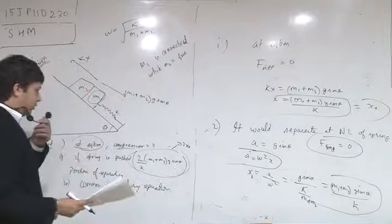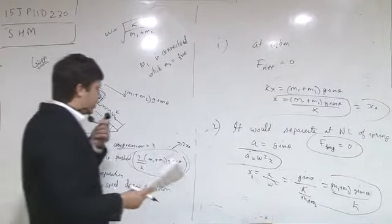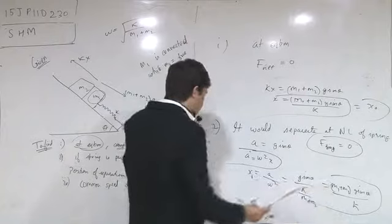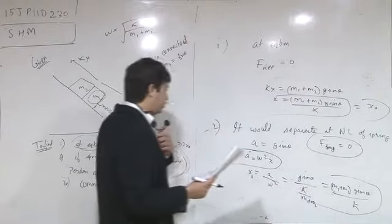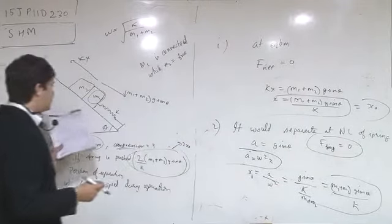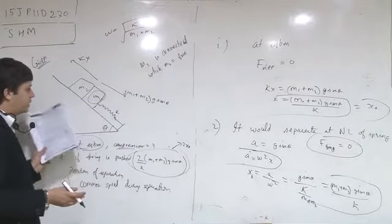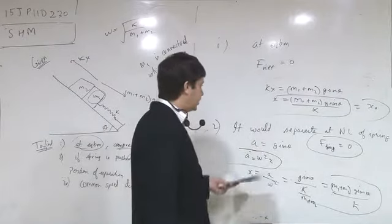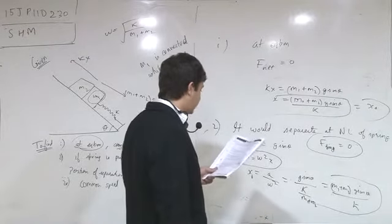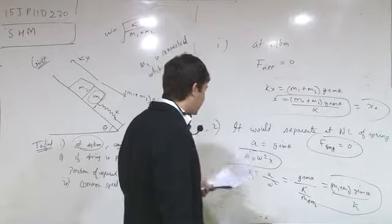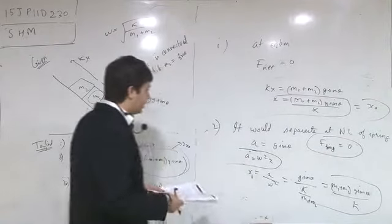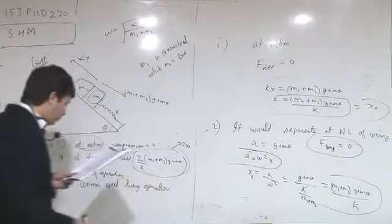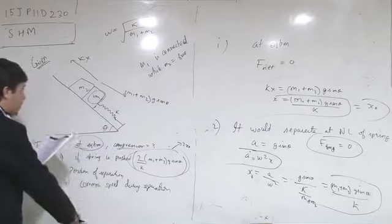The position is given with respect to the mean position. The distance from natural length to mean position is x0, so the answer is the same for both parts A and B. We have also verified this numerically. Now we have to find part C.